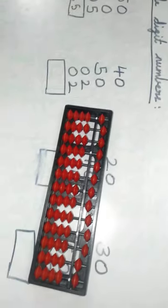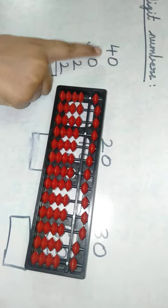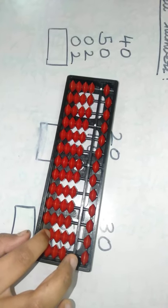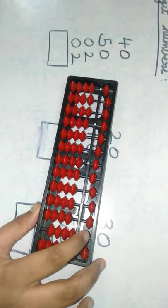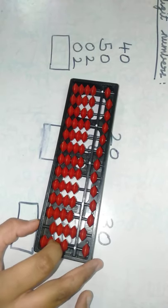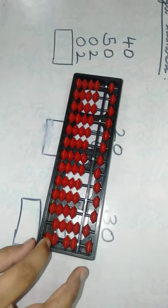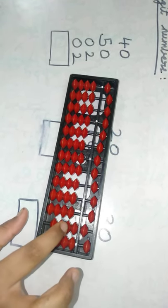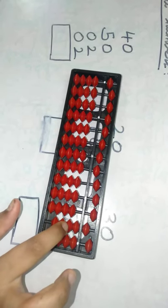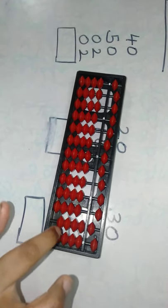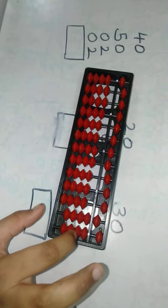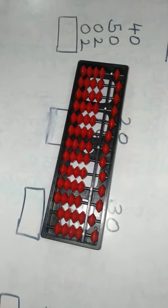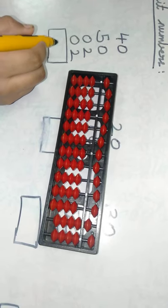Now let's go for the next problem. The first number is 40 — we have to move 4 beads from the 10's place. Then 50 — we have to move the upper bead in the 10's place. Then 2 — we have to move 2 lower beads in the 1's place. Again 2 — we have to move 2 lower beads in the 1's place. So: 50 plus 10 is 60, plus 10 is 70, plus 10 is 80, plus 10 is 90. In the 1's place: 1 plus 1 is 2, plus 2 is 4. The answer is 94.